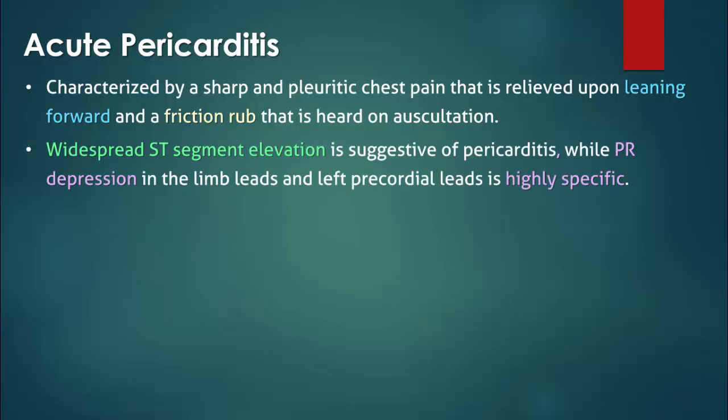Typical ECG findings include widespread ST elevation and PR depression. In leads AVR and V1, however, the changes are reciprocal, so in those leads you'll find ST depression and PR elevation.